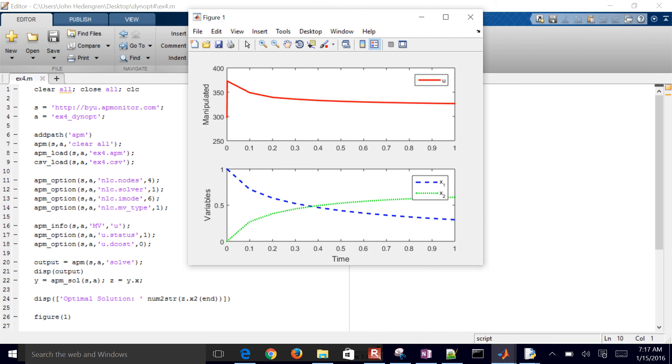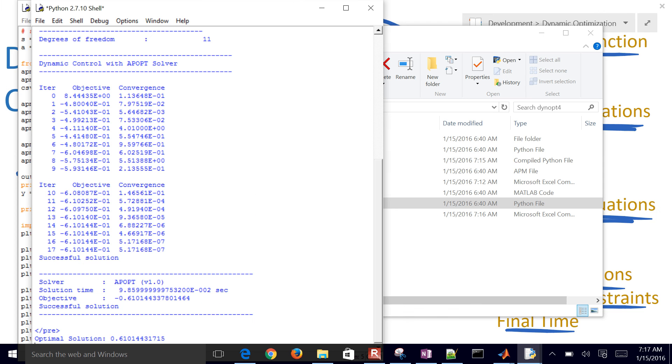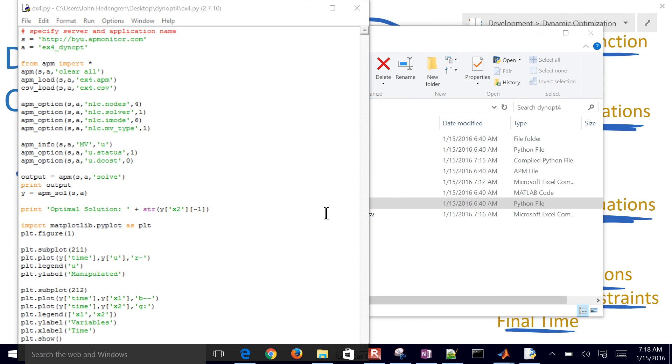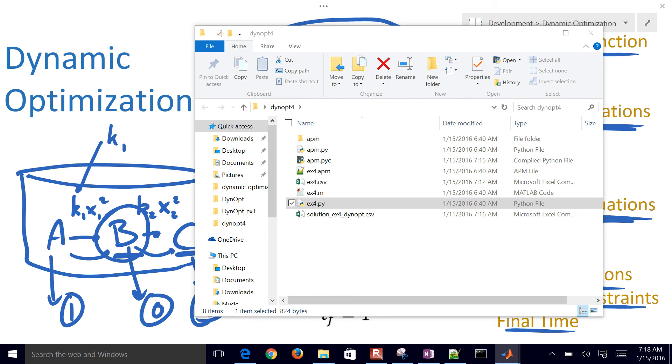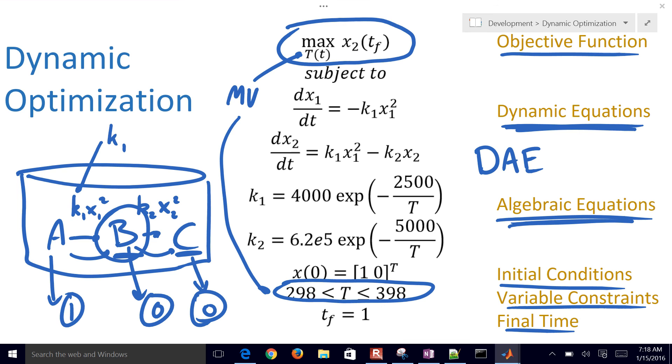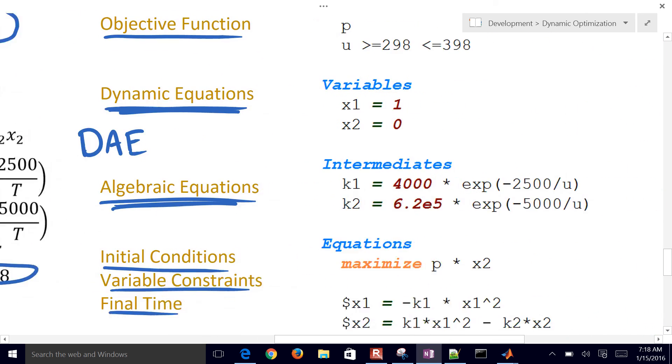So that is the tutorial on dynamic optimization, just solving this benchmark problem. And so just to review, we created these files to solve this problem. We were trying to maximize X2 by changing this temperature right here. This is the range that we could operate in.